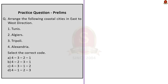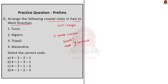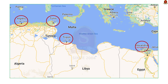Our next question is a map-based question about Libya. Libya has been in crisis since 2011 when a NATO-backed uprising toppled the Muammar Gaddafi government. Currently there are two power centers: the Tripoli-based Government of National Accord (GNA) and the Tobruk-based House of Representatives (HOR). In this year's prelims, a map-based question about Libya can be expected. The question asks to arrange four coastal cities in east-to-west sequence. From the map, Alexandria is the easternmost, then Tripoli, then Tunis, then Algiers. The correct answer is option C — 4, 3, 1, 2.